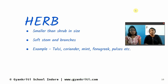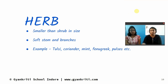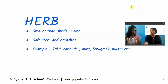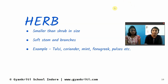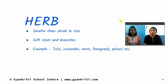Now we will discuss the features of herbs. They are smaller than shrubs in size. They have soft stem and branches. You can see mint, tulsi, coriander, and methi — leaves we use in the form of herbs. We use many herbs in our food and in different dishes, and they also have medicinal properties which we get on a regular basis. Thank you.